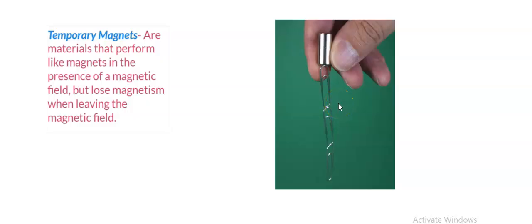But if you disconnect the magnet on top, all the paper clips below it will just fall because it's a temporary magnet. It has that influence as long as it's in that magnetic field. It gets that magnetic power, magnetic force.